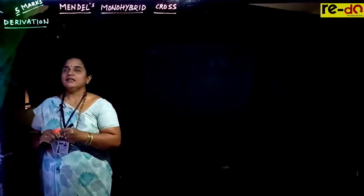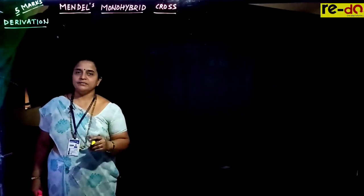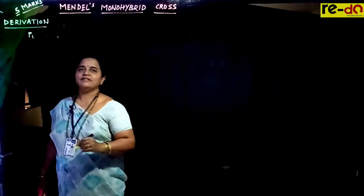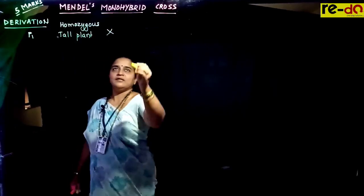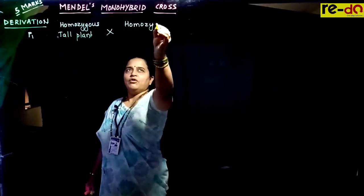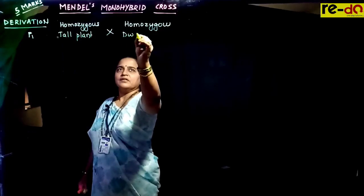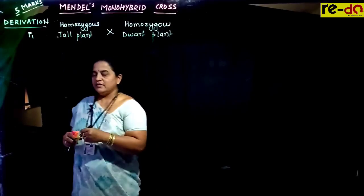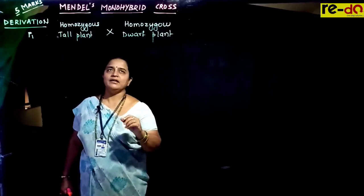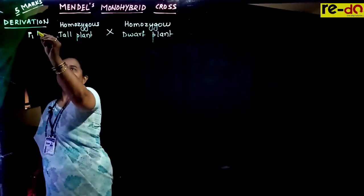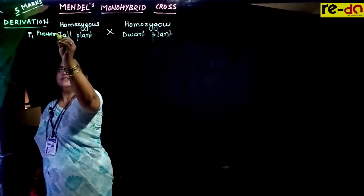According to Mendel, the plants selected for hybridization are tall and dwarf. When we write the derivation, towards the left-hand side we need to write P1, which stands for parental generation 1. He selected a homozygous tall plant — it is pure breeding — and hybridized it with a homozygous, pure-breeding dwarf plant. The character considered is height of the stem. This is the P1 phenotype.